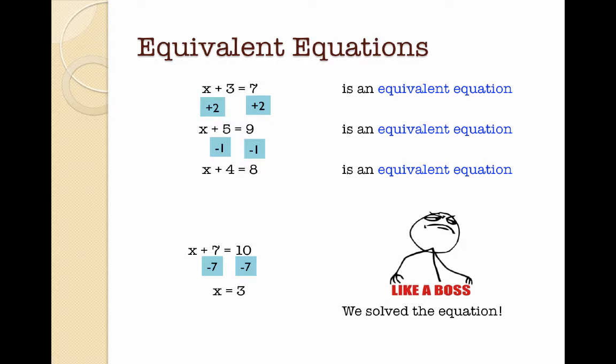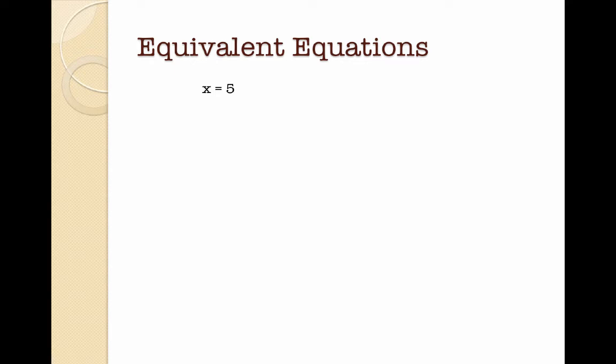We're going to talk about solving equations in the next video. Let's look at more manipulation of these equations. Let's say we start with x equals 5 — the letter x represents the number 5. What happens if I multiply both sides by 2? Well, my left hand side will be 2x because it's 2 lots of x, and the right hand side will be 2 lots of 5, which is 10. This is now an equivalent equation. What happens if I add 3 to both sides? For 2x plus 3, I can't add 2x and 3 together because they're not like terms, so I write 2x plus 3. For the right hand side, 10 plus 3 is 13, so 2x plus 3 equals 13.